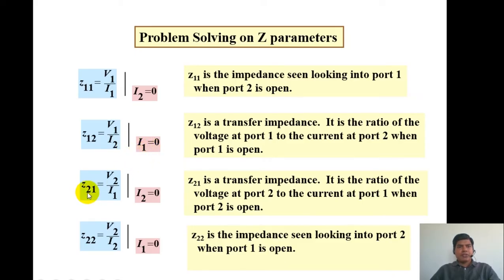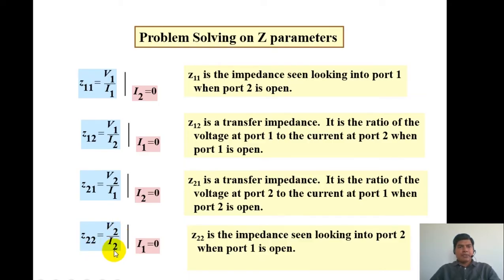Z21 is V2 divided by I1 when I2 equals 0, so Z21 is a transfer impedance — the ratio of voltage at port 2 to current at port 1 when port 2 is open-circuited. Z22 is the input impedance looking into port 2, that is V2 divided by I2 when I1 equals 0, so it is the input impedance looking into port 2 when port 1 is open.